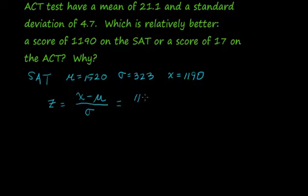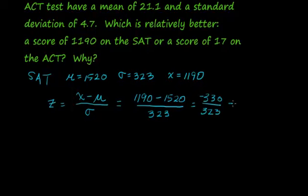We're interested in the score of 1190. How different is that from 1520? What's that distance between those two? And then how many of these standard deviations will divide into that difference? The difference here is negative 330. Using our rounding rule for z-scores to two decimal places, we get negative 1.02.